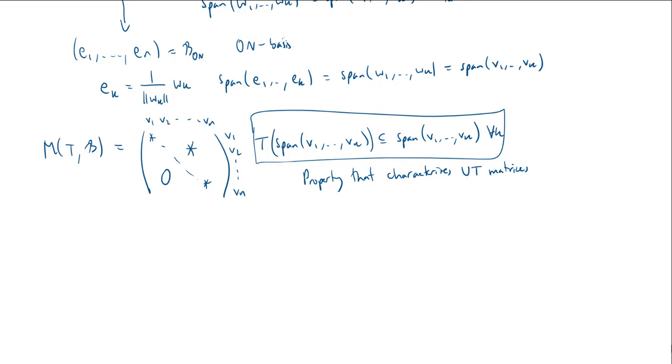So what happens when we take the matrix of T with respect to the orthonormal basis we built - the E1 through ENs up above. Well, now we have E1, E2, dot dot dot, EN, E1, E2, EN. So again, but we know that if I take T of the span of E1 through EK, well, we set up above. The span of E1 through EK is actually the same as the span of V1 through VK. So this is T of the span of V1 through VK. But we already know T of the span of V1 through VK is contained in the span of V1 through VK, which, again, we know is equal to the span of E1 through EK. And this works for all K.